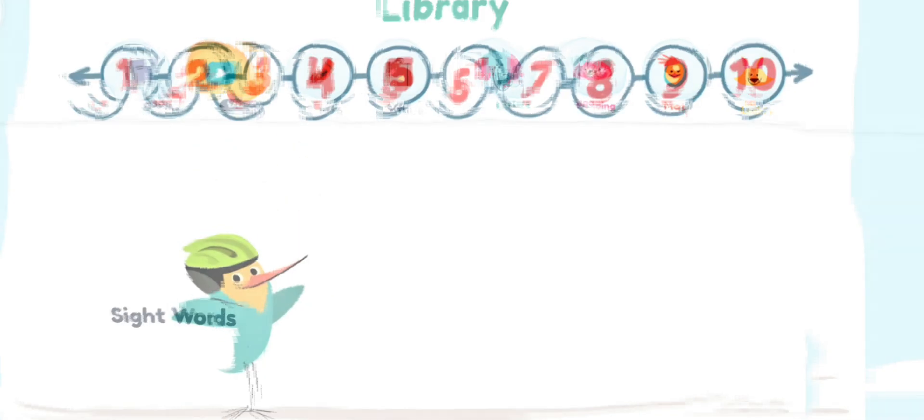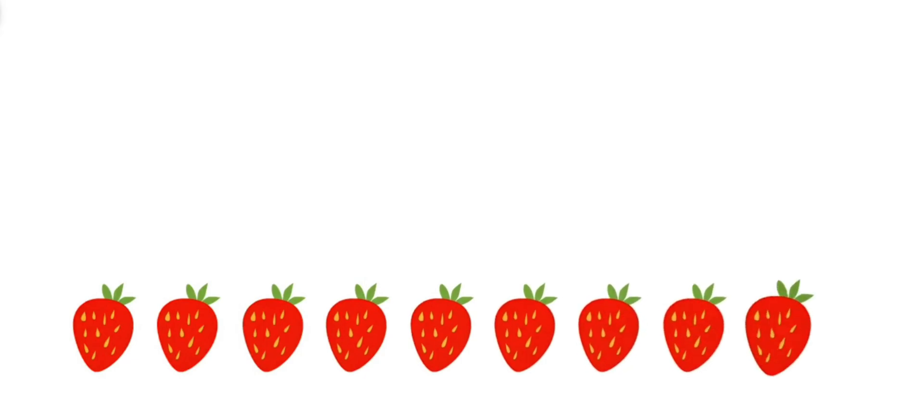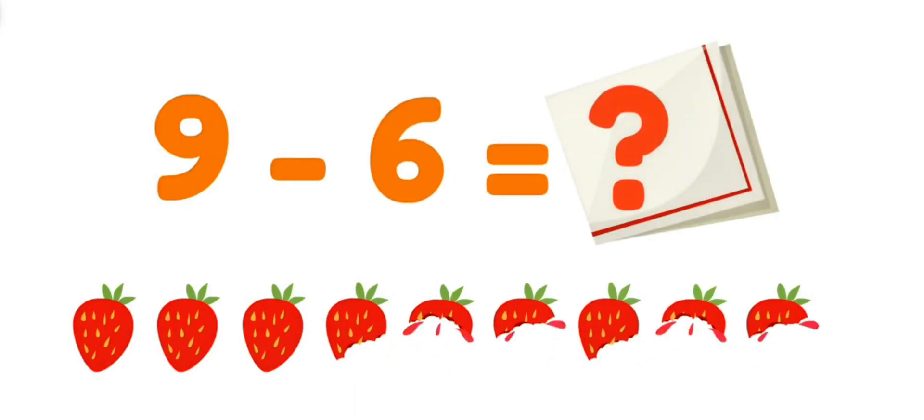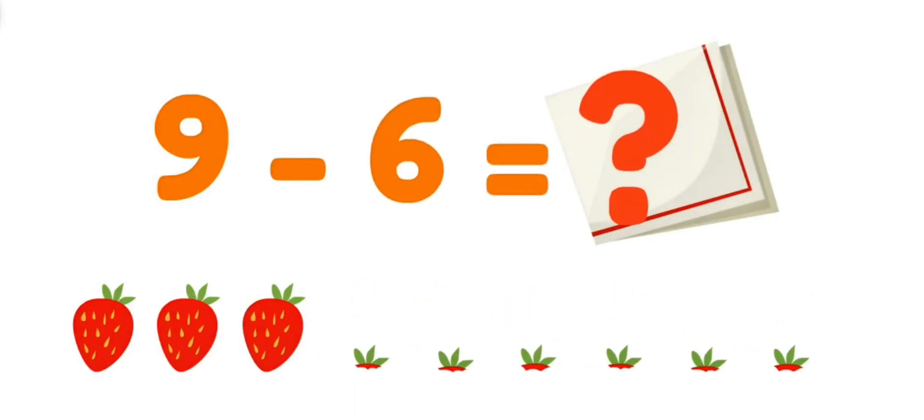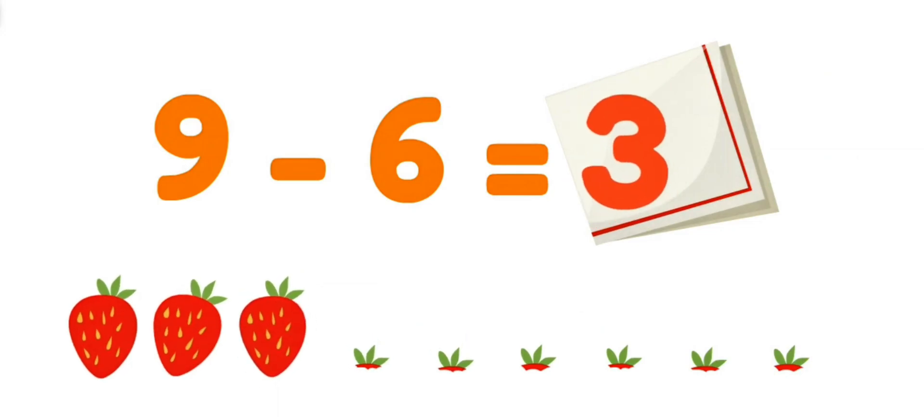Did you know that strawberries are my favorite food? For snack time, there were nine strawberries! And I ate six! How many are left? Let's count backwards to find out! Nine! Eight! Seven! Six! Five! Four! Three! There are three left!